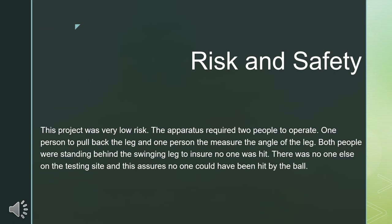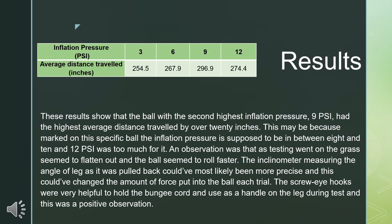The results show that the second highest inflation pressure of 9 PSI had the highest average distance traveled by over 20 inches. This may be because the specific ball used was marked for between 8 and 10 PSI, and the 12 PSI was too much for it.